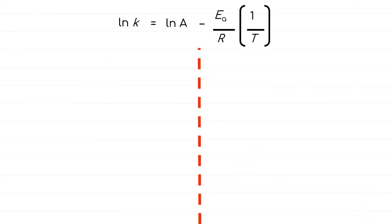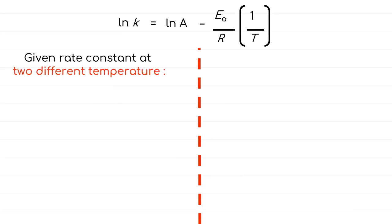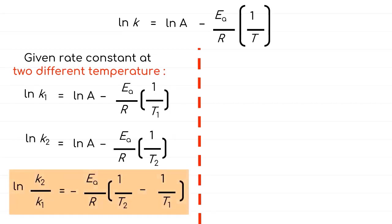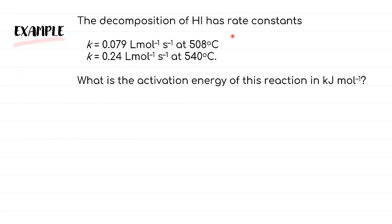From the modified Arrhenius equation, there are two possible question types. First, if the question gives rate constants at two different temperatures, we write ln k for each temperature and subtract one equation from the other to get: ln(k2/k1) = −(Ea/R)(1/T2 − 1/T1). Note that if k2 is in the numerator, then T2 must come first in the temperature term.